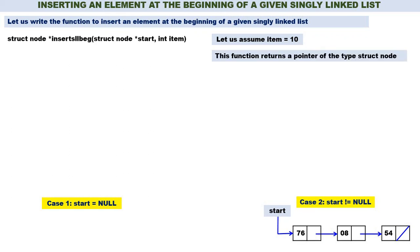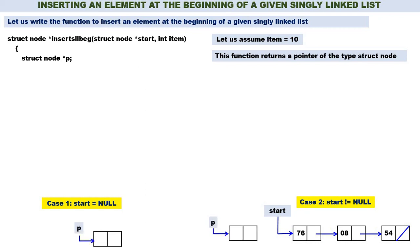Let us assume item is equal to 10. The function returns a pointer of the type struct node — struct node* insert_sll_beg will return a pointer of the type struct node. We declare a temporary pointer struct node* p. The first step in both cases is to create a new node pointed by P using: p = (struct node*) malloc(sizeof(struct node)).